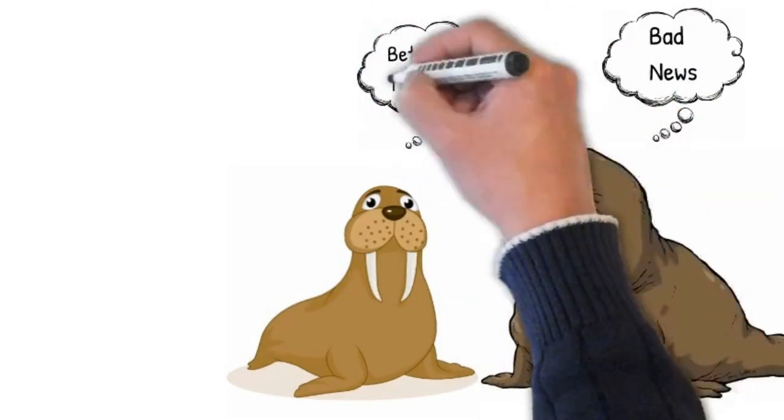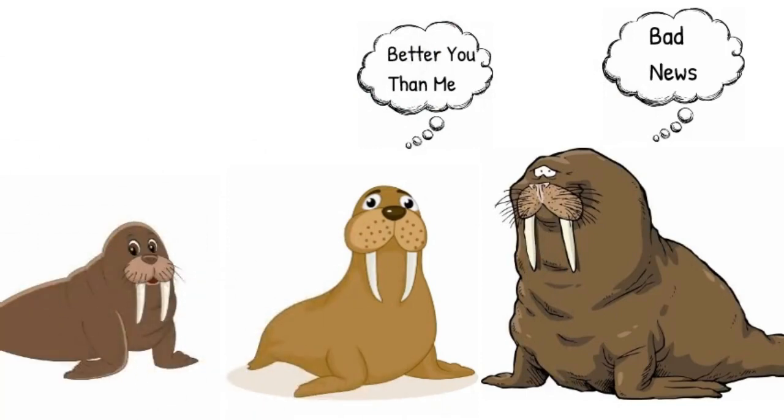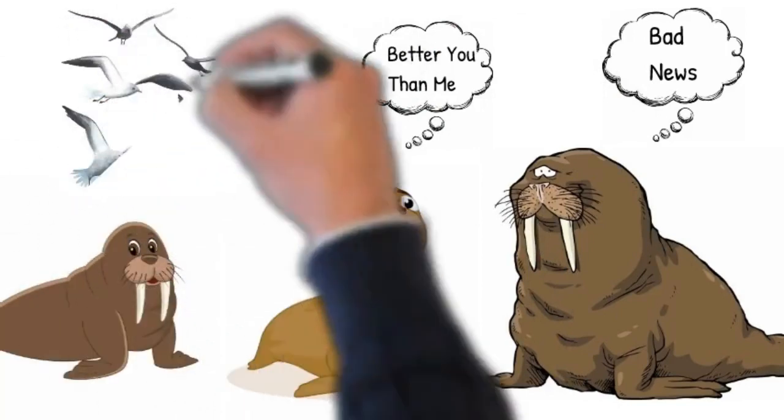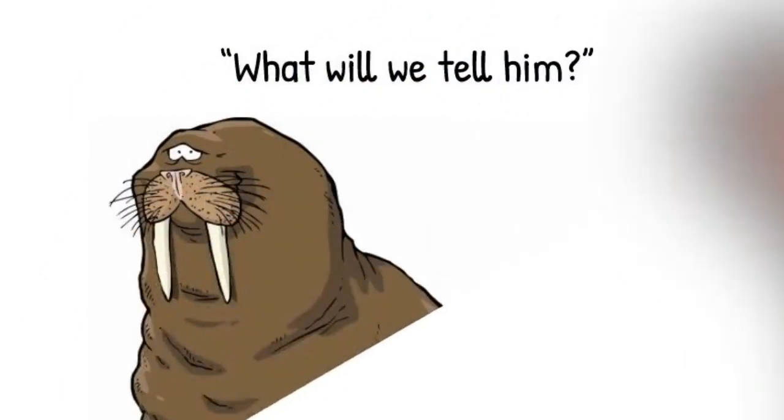He had such a terrible temper that every walrus in the herd was terrified of his ferocious bark. What will we tell him? whispered Basil, the second-ranking walrus. He well remembered how the old man had raved and ranted at him the last time the herd had caught less than its quota of herring, and he had no desire to go through that experience again.